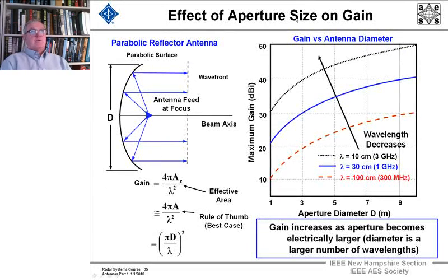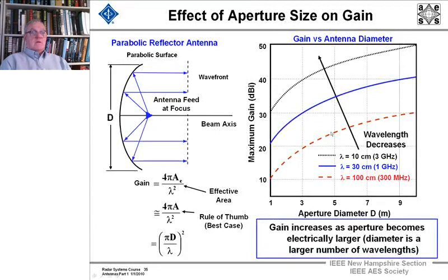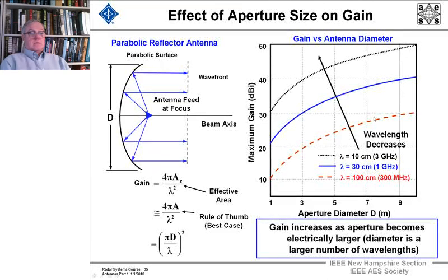This illustrates the effect of aperture size on antenna gain. The equation is: gain equals 4π times the effective area over λ². As a rule of thumb, gain equals 4πA/λ². I've plotted three cases with wavelengths of 100 cm, 30 cm, and 10 cm. As wavelength decreases, gain goes up, and as aperture diameter increases, gain goes up.